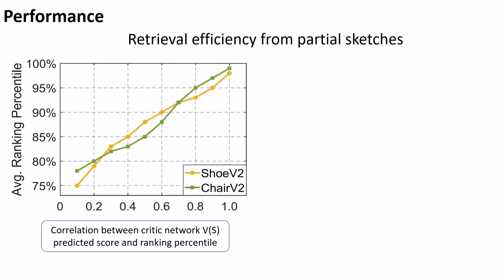The scalar value predicted by our critic network signifies the retrieval ability of partial sketch with the notion of higher being the better sketch. Figure shows correlation between score predicted by our critic network and ranking percentile.